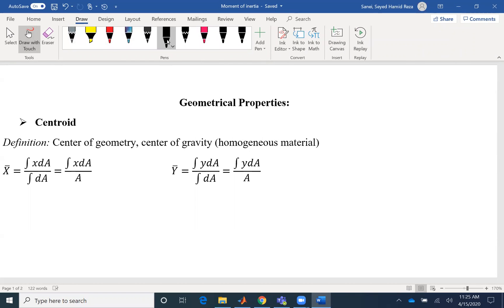For example, if you have a rectangle, then the center of geometry or center of gravity would be the center. We show it by X bar, which would be B over 2, and then Y bar would be A over 2.